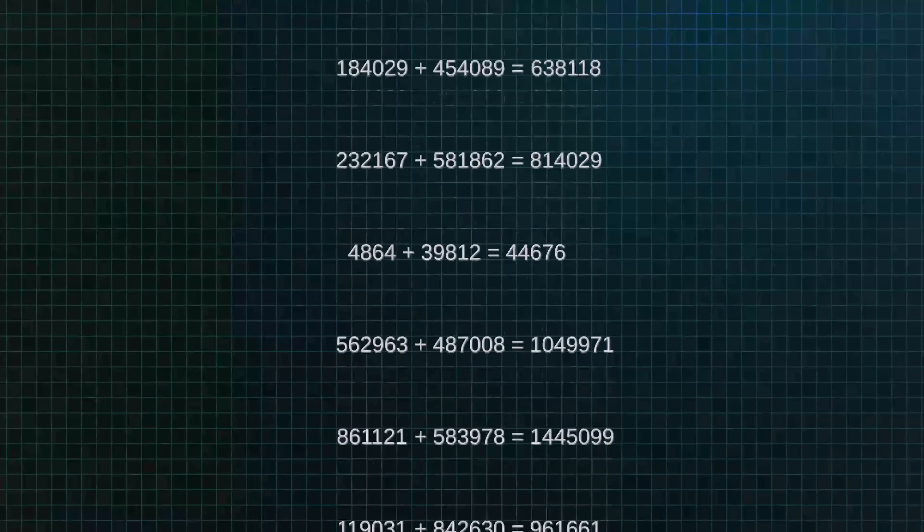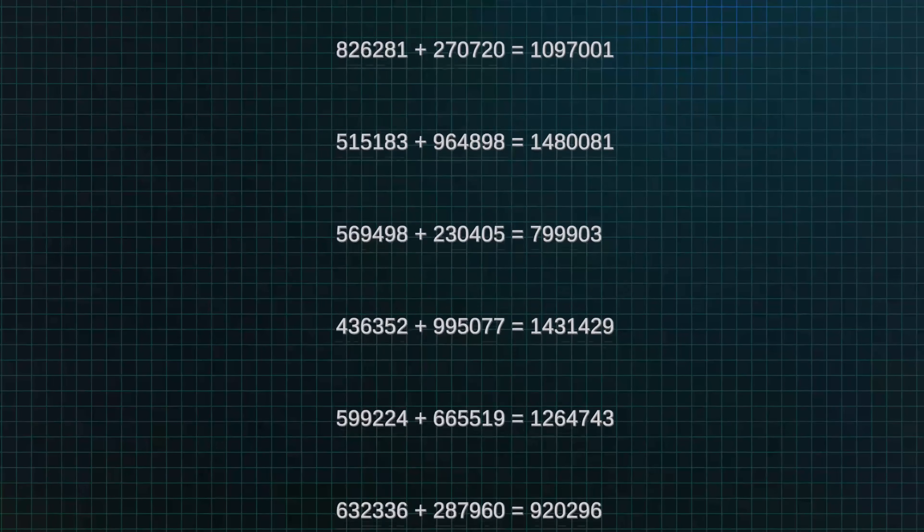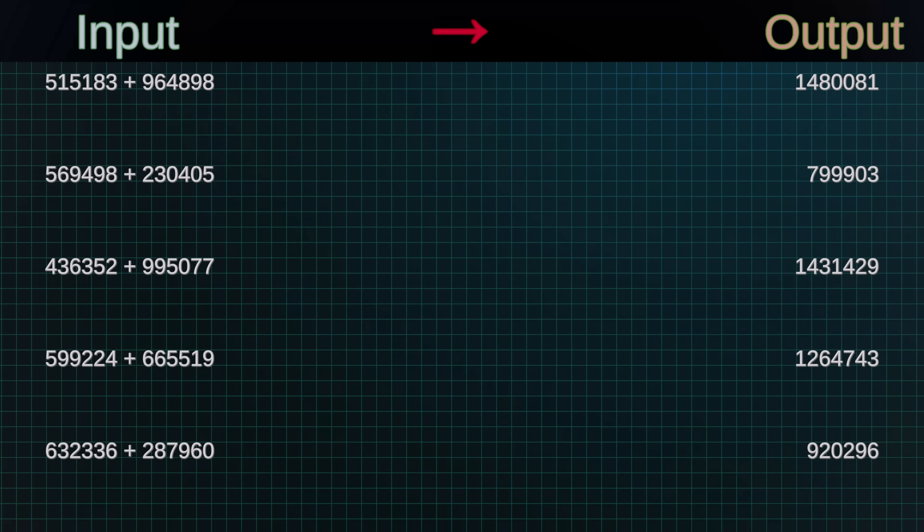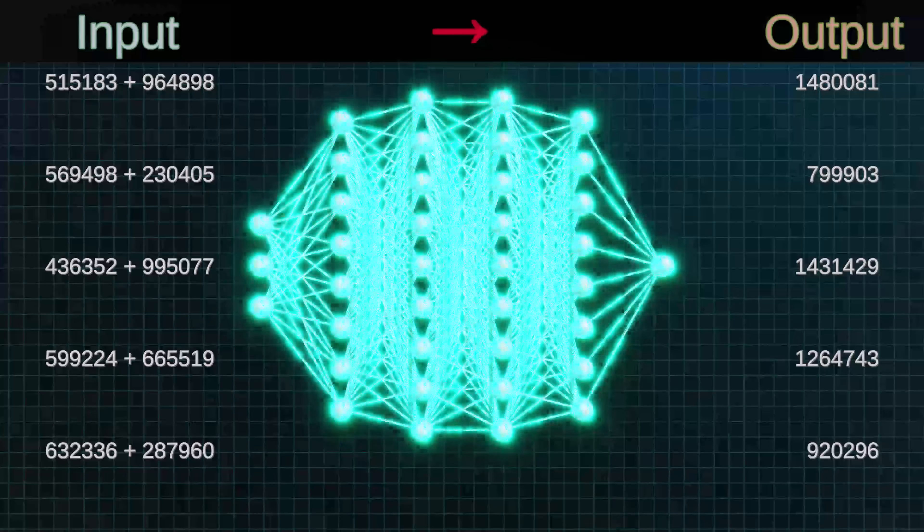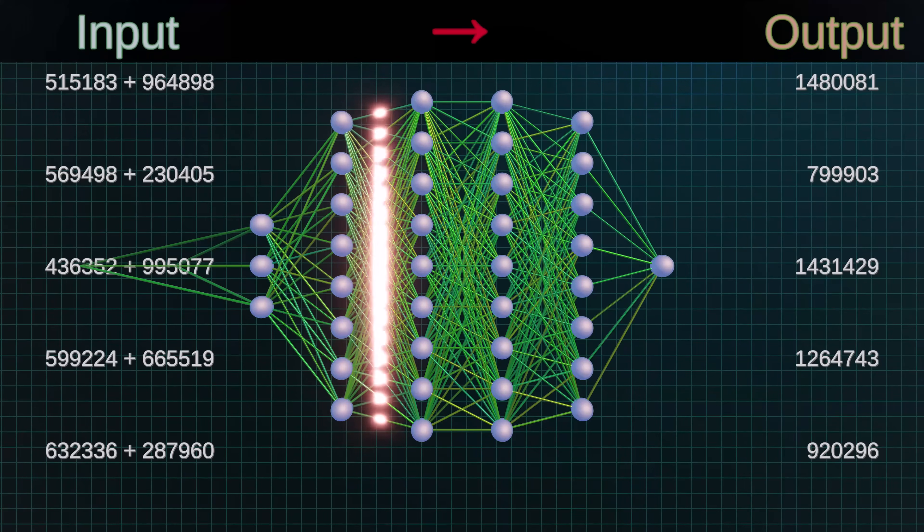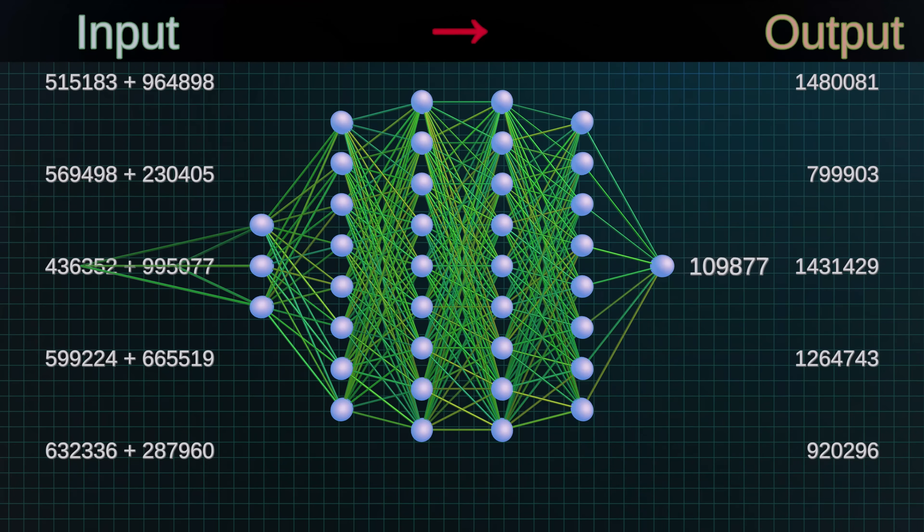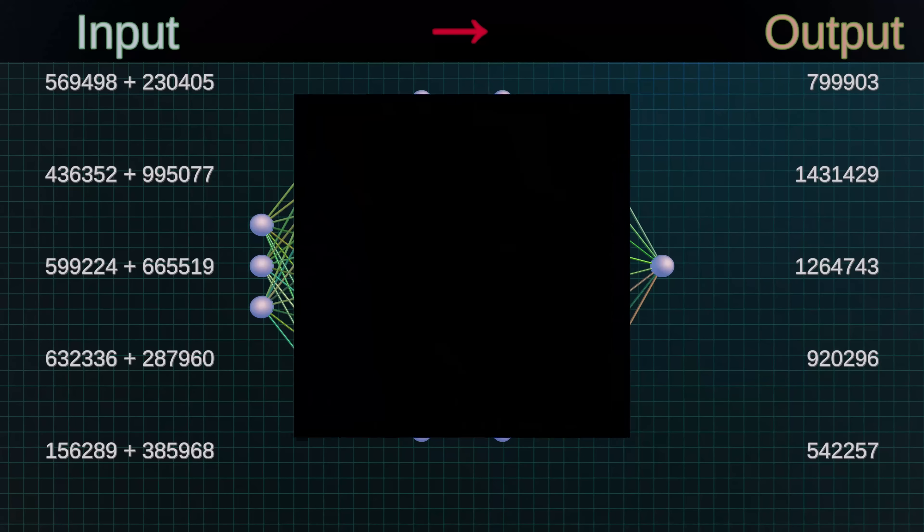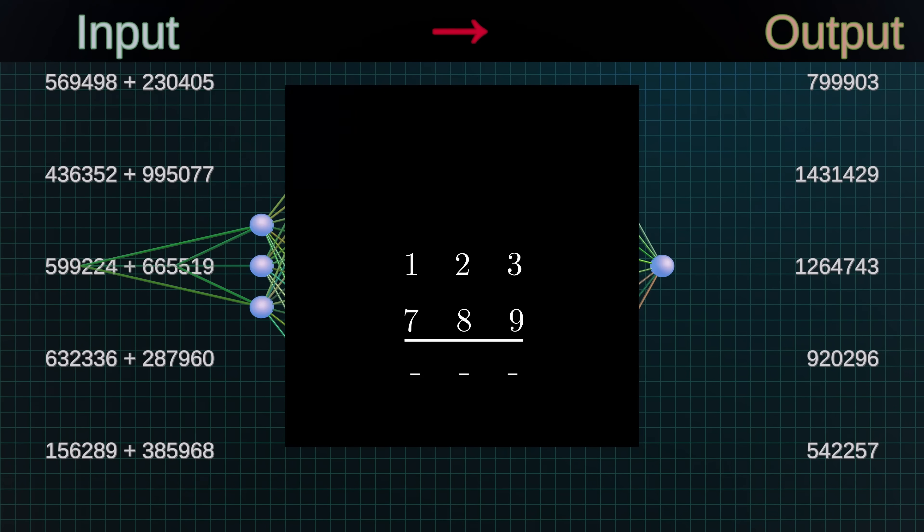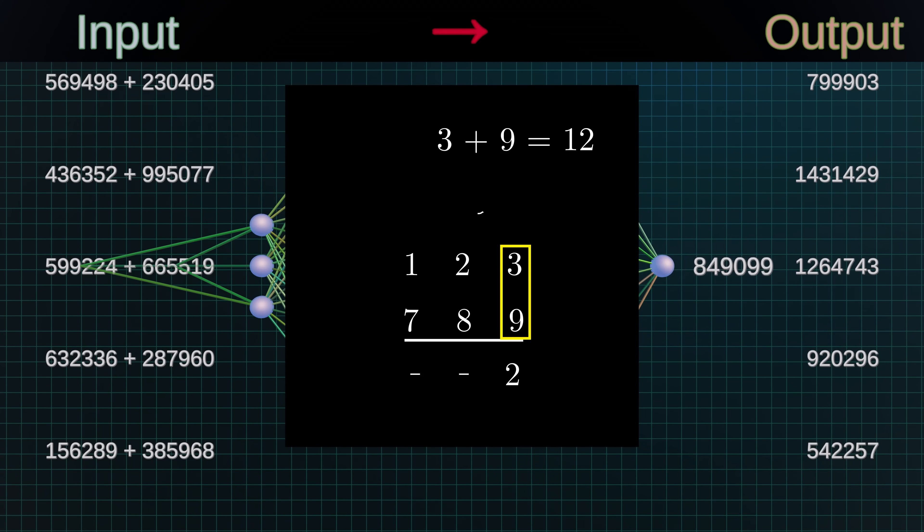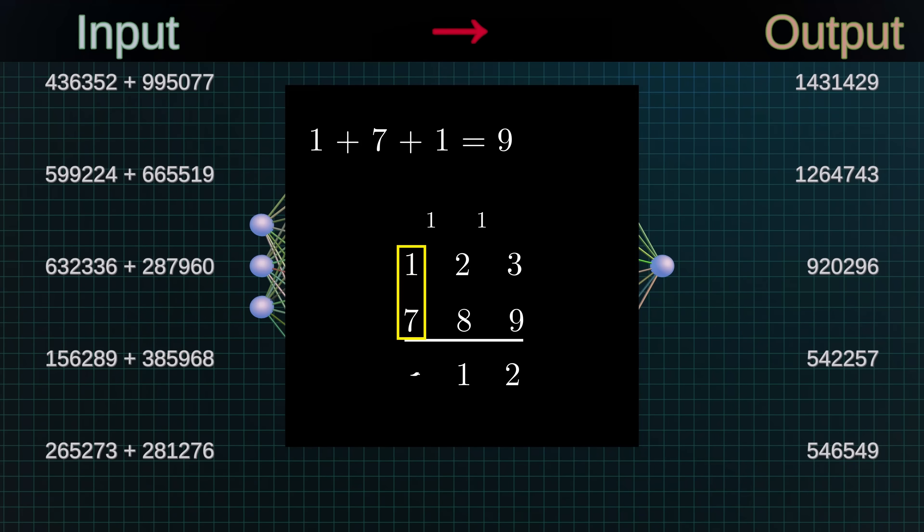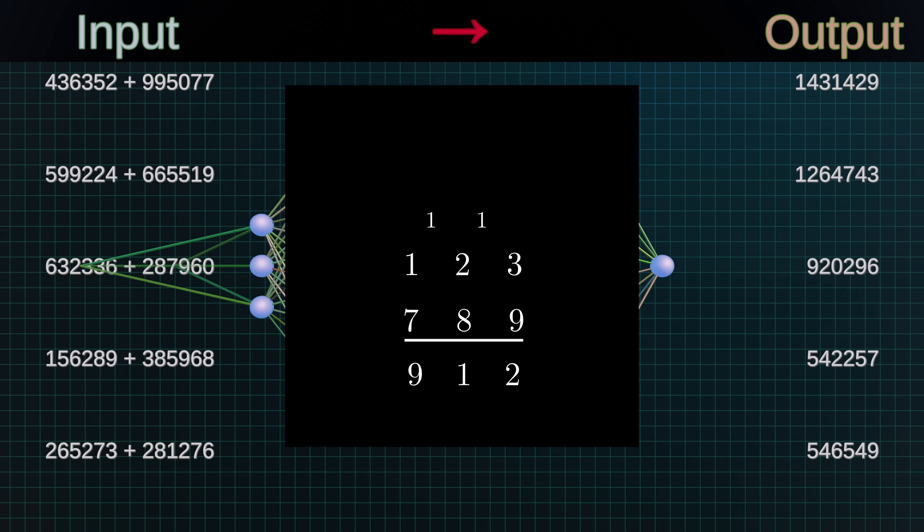In machine learning, we train a model to do what we want it to do by giving it a bunch of examples. Suppose you wanted to train a neural net to add two numbers together. You would give it a list of examples of a pair of numbers as input, and the corresponding sum as the desired output. The neural net then learns, that is, it adjusts its weights, until it can successfully map the inputs to the outputs.